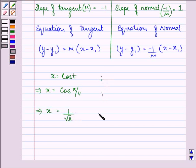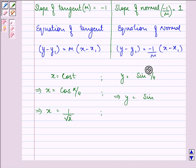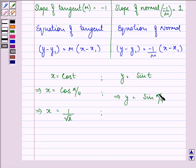Similarly, we have y as sin pi by 4. First of all we have y as sin t on substituting the value of t as pi by 4. So now we have the value of y as 1 upon root 2.